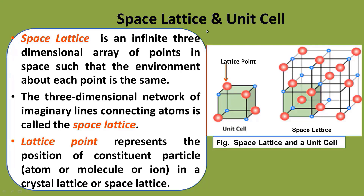Now we focus on the definition of space lattice and unit cell. On the right side, a space lattice is shown, which has several unit cells. A cubic unit cell is portrayed, and the corners or edges of this unit cell are called lattice points. Space lattice is defined as an infinite three-dimensional array of points in space such that the environment about each point is the same.